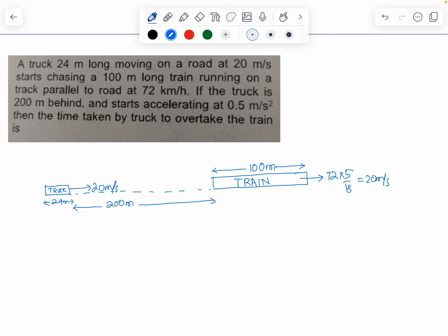Now the truck starts accelerating at 0.5 meters per second squared. That means the initial relative velocity is zero, and the relative acceleration with respect to the train is 0.5 meters per second squared.